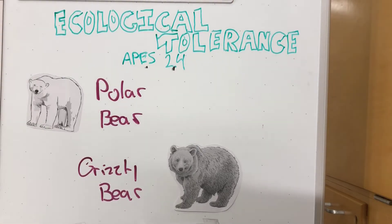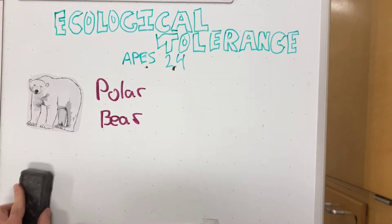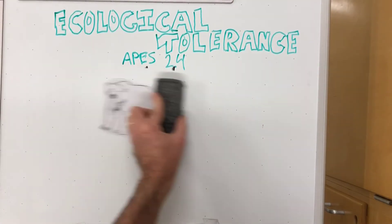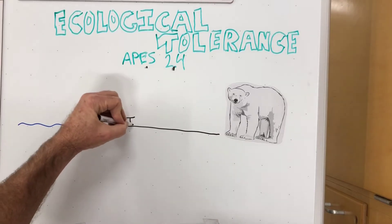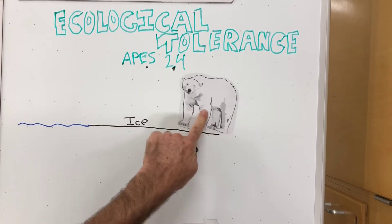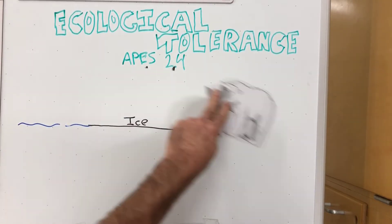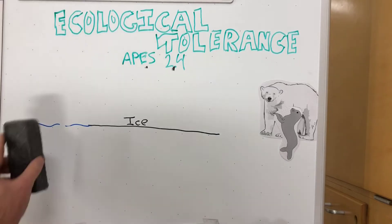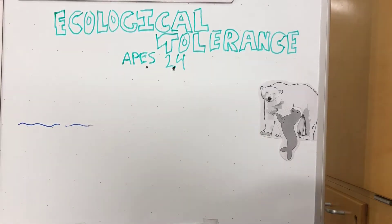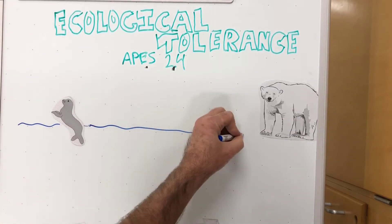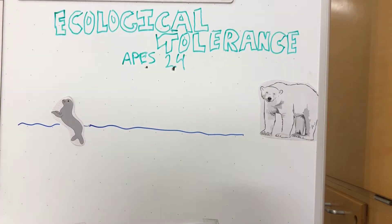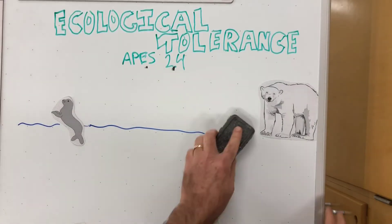Kodiak bears are very recently diverged evolutionarily from the polar bear. The polar bear is dependent on sea ice — it walks out onto the sea ice where it hunts seals that come up to breathe. That's how it gets the majority of its food source, and it's specialized to do that. However, as the sea ice melts, polar bears are having to look for other food sources.